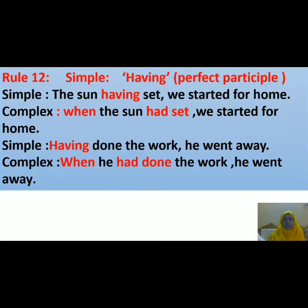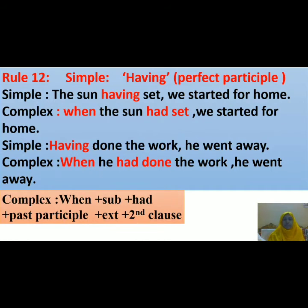These two clauses are joined by the subordinating conjunction 'when'. Remember the construction of this type of complex sentence: write 'when', then a subject, then 'had', then the past participle of the verb, then extension, and then the second clause remains unchanged.